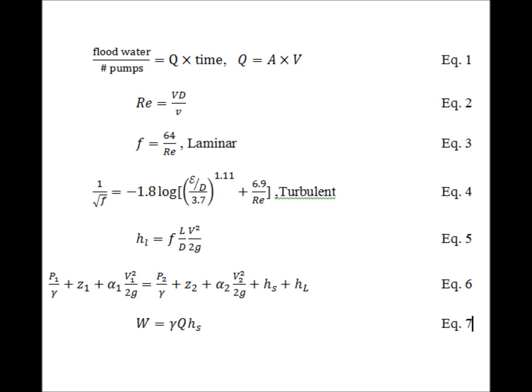We can cancel off P₁ and P₂ because both of the bodies of water are open to the atmosphere. We can also cancel out the V₁ and V₂ portions of the equation because the velocities of the bodies of water are large and going to be moving slow enough that we can consider them zero. Next, we know the height elevation change between the flood body and the rebuilt side of the levee.